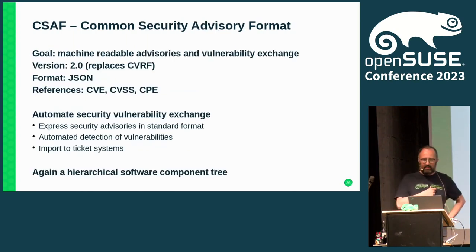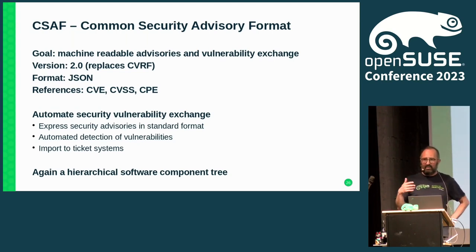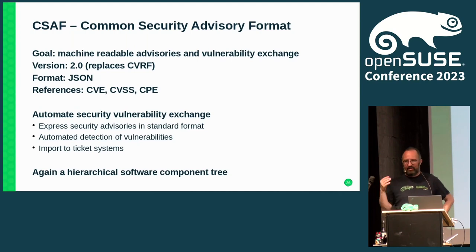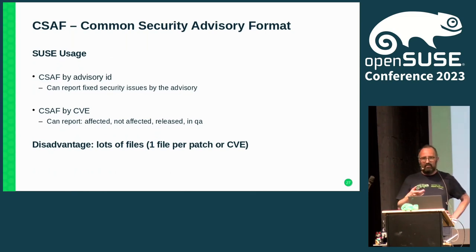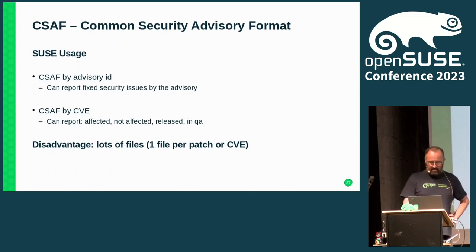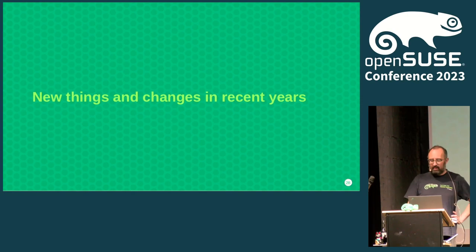There's a next generation of that called Common Security Advisory Format (CSAF). Basically the same concept and methodology, just JSON instead of XML, so it's a bit less verbose. It has a bit more refinement on the status of products and also includes a vulnerability exchange profile directly — the VEX profile. We publish by advisory ID and also indexed by CVE, with affected, not affected, released, and in-QA states. Again, the disadvantage is lots of files. They're available on our HTTPS website and you can just mirror and use them, under a Creative Commons license.